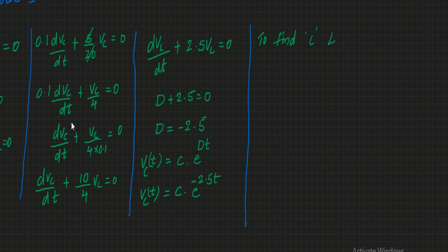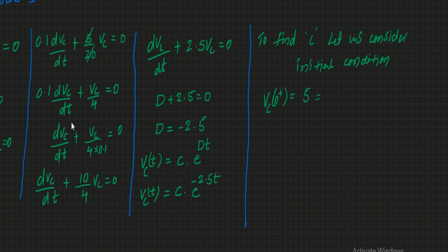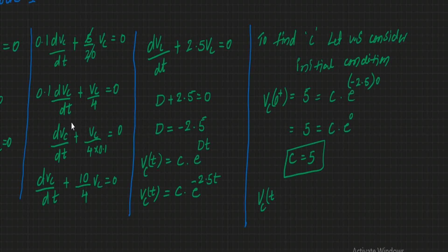To find the constant C, apply the initial condition. From the question, Vc(0+) = 5 volts. Substituting: 5 = C·e^(-2.5×0) = C·e^0 = C. So C equals 5. Therefore, Vc(t) = 5·e^(-2.5t) for t greater than 0.